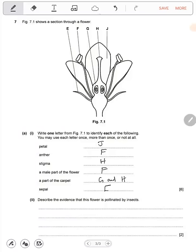Describe the evidence that this flower is pollinated by insects. How could it be that this flower is actually pollinated by insects? One of them is that it has large petals which attract insects.